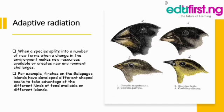The third type is adaptive radiation, when a species splits into a number of new forms when a change in the environment makes new resources available or creates new environmental challenges. An example is the finches on the Galapagos Islands, which developed different shaped beaks to take advantage of different kinds of food available on different islands.